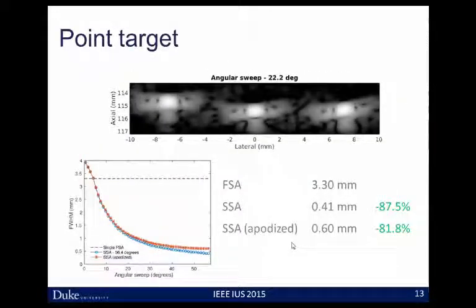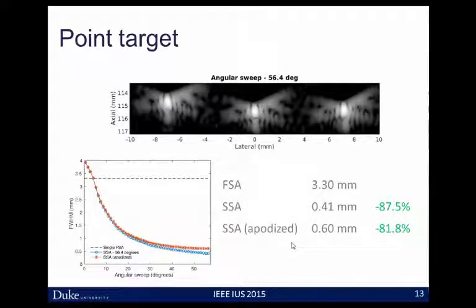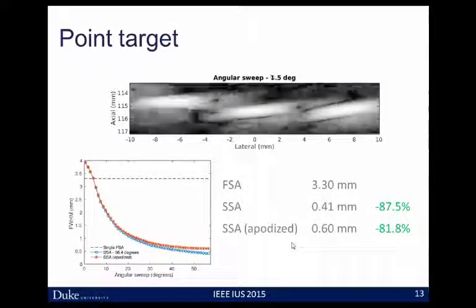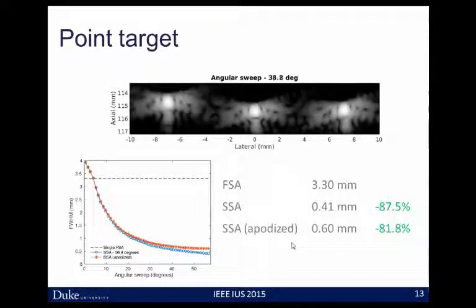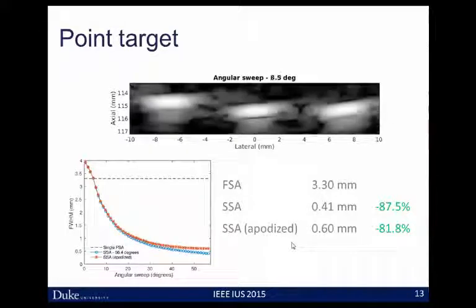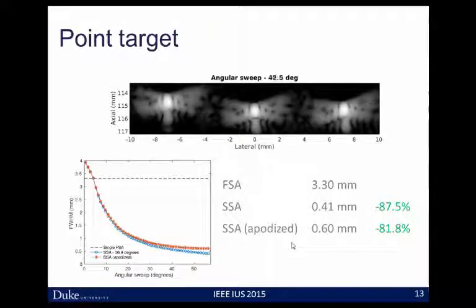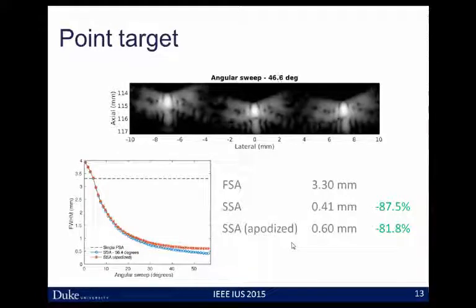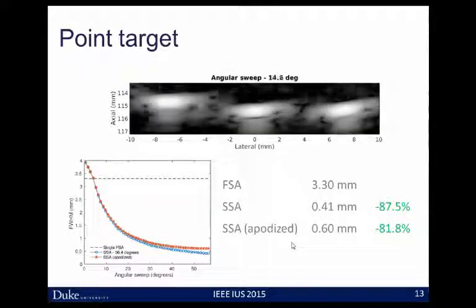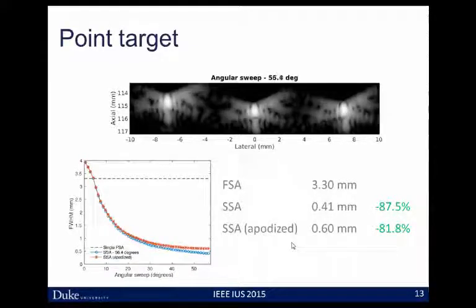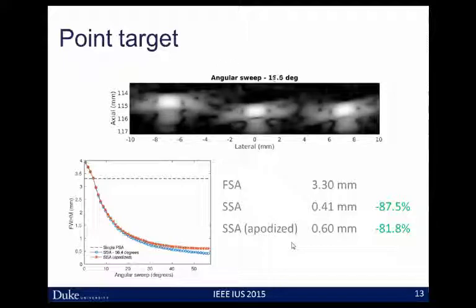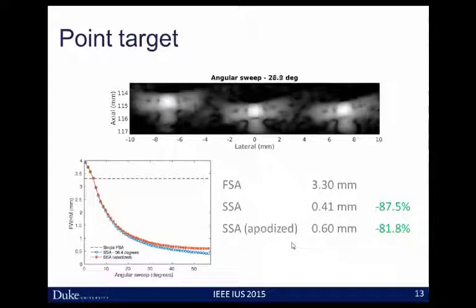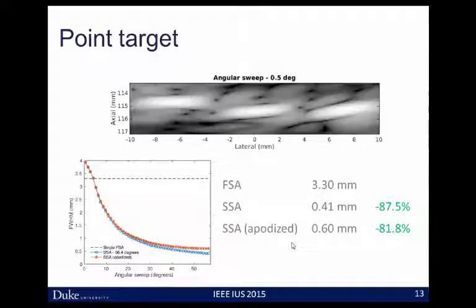Here we play back the movie of what happens as we effectively increase the aperture size for three sample wire targets, measuring the full width half max at each aperture size. We compare to our 3.3-millimeter original full synthetic aperture image. As we begin to sweep, we quickly surpass that resolution, ending up on the far right with the swept synthetic aperture image at 0.41 millimeters. As we apply apodization to control those side lobes, we sacrifice some resolution going to 0.6 millimeters — still an 81.8% improvement over the full synthetic aperture. We also see the impact of geometric diminishing returns: to halve our resolution, we need to double our sweep length, which even with large acoustic windows becomes impractical in vivo.